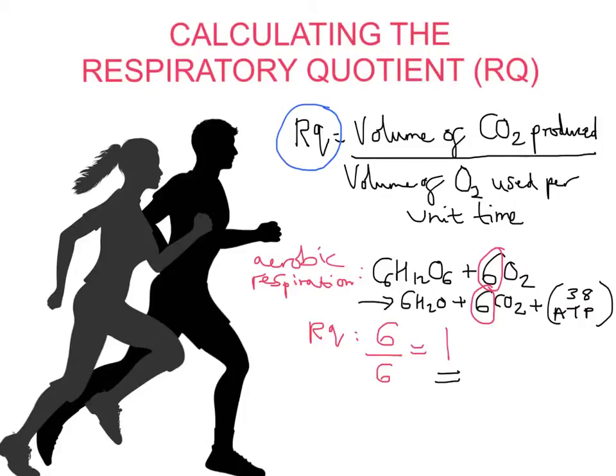Now the RQ value actually is used to tell us what kind of food is oxidized, i.e. the substrate which an organism is using for respiration. And carbohydrates have an RQ value of 1. So we're right here. Carbohydrate. Carbohydrates tend to have a value of 1.